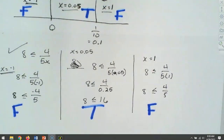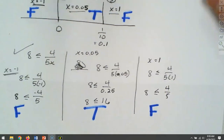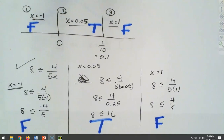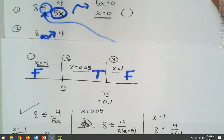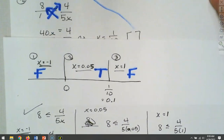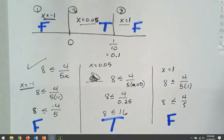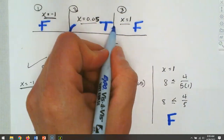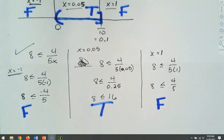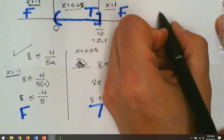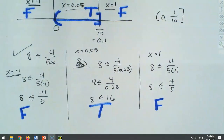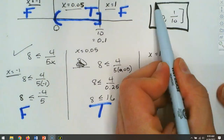When we go to shade, 0 gets parentheses and 1/10 gets square brackets. Our answer is in between. In interval notation, the answer is (0, 1/10].